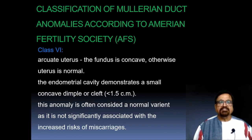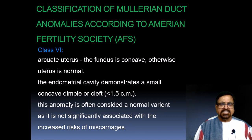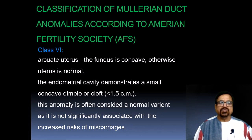Class 6 is the arcuate uterus. The fundus is concave, but otherwise the uterus is normal. The endometrial cavity demonstrates a small concave dimple or cleft which is less than 1.5 cm. This anomaly is often considered a normal variant and is not significantly associated with an increased risk of miscarriage.